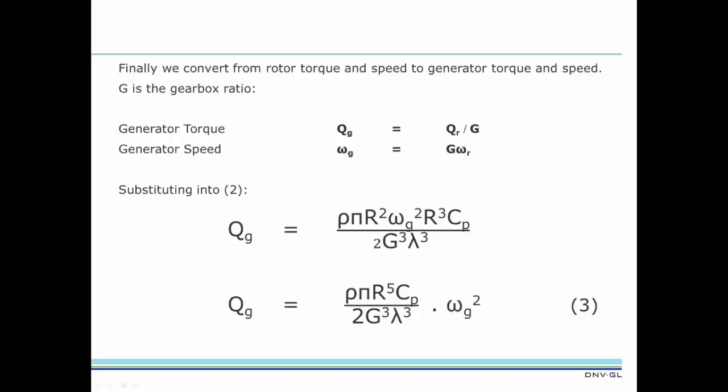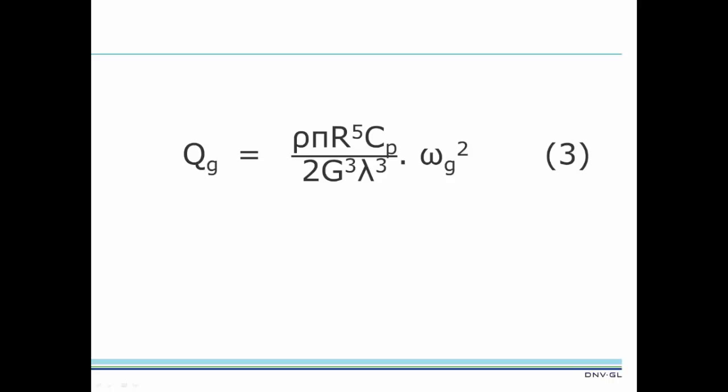Now we're almost there. So far, everything has been completely general and equation 3 could be used to find the generator torque for any combination of tip speed ratio and generator speed. The final step is to make this equation specific to the operating state that generates maximum power.